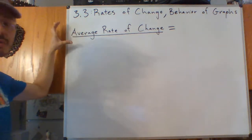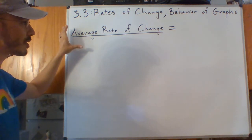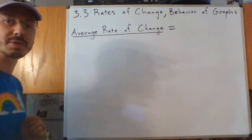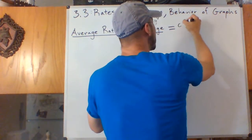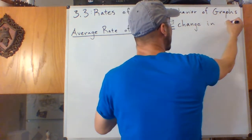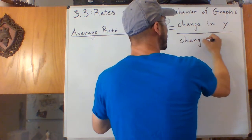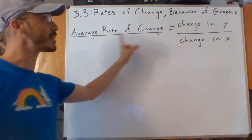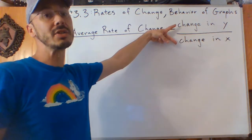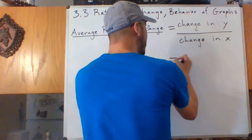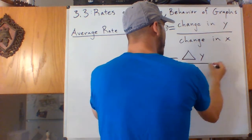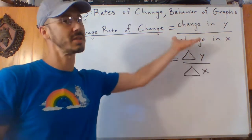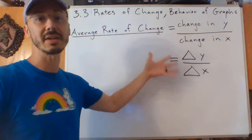We're going to start out with average rate of change. You can think of it as the way that a quantity of interest changes over time, like miles per hour. We're talking about the change in Y over the change in X — that's a fraction, the ratio of delta Y over delta X, which is a shorter way to write that.